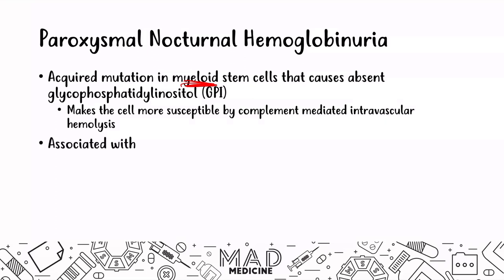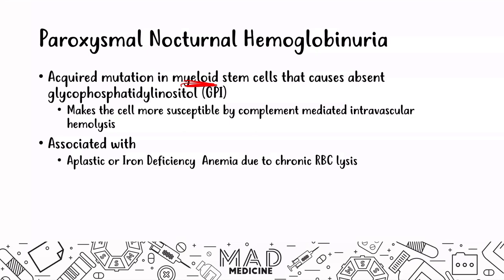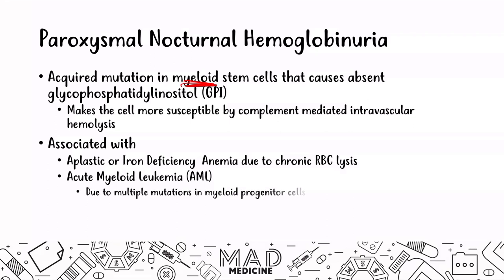PNH can be associated with aplastic anemia or iron deficiency anemias due to chronic red blood cell lysis. And this is really high yield: it can also be associated with AML, acute myeloid leukemia, due to multiple mutations in the myeloid progenitor cells. Because you have a mutation in the myeloid stem cell, you can also see PNH in AML. This only happens in about 10% of patients, but you should still know it for step one.